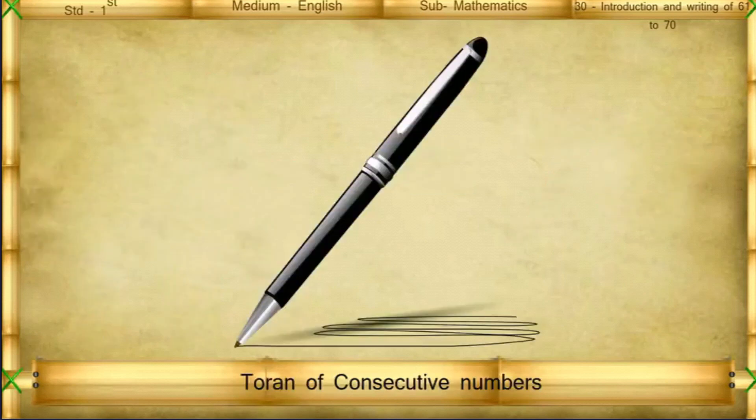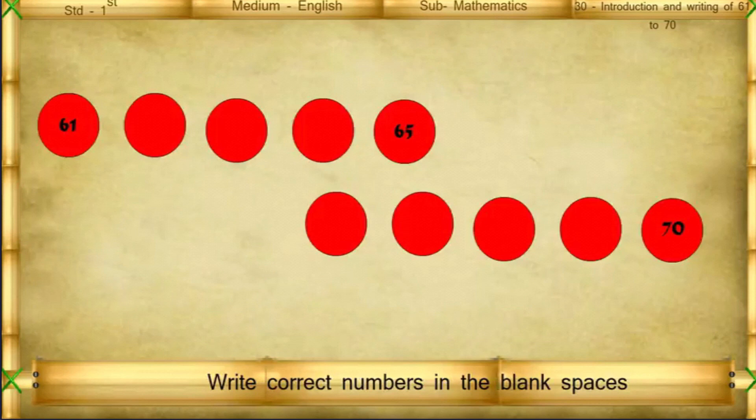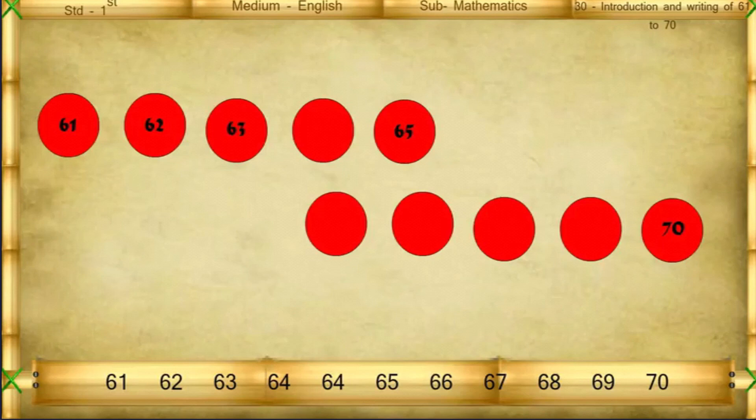Turn off consecutive numbers. Write correct numbers in the blank spaces: 61, 62, 63, 64, 65, 66, 67, 68, 69, 70.